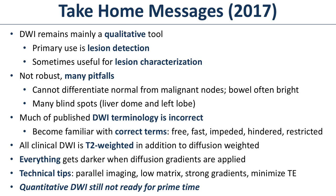Diffusion is not robust — there are many pitfalls. You cannot tell normal from malignant lymph nodes using diffusion. Bowel is often bright on diffusion, so it's very hard to tell the difference between normal bowel and malignant bowel. There are many blind spots: the left lobe of the liver and the liver dome. So the second most important organ in the human body has blind spots with diffusion.